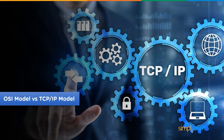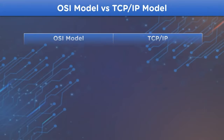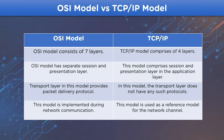Now let's compare the OSI model versus the TCP/IP model. The OSI model consists of seven different layers, whereas the TCP/IP model comprises four different layers. The OSI model has separate session and presentation layers, whereas the TCP/IP model uses a single application layer. The transport layer in the OSI model provides packet delivery protocols, but in the TCP/IP model the transport layer does not provide such protocols. The OSI model is implemented during network communication, while the TCP/IP model is used as a reference model for the network channel.